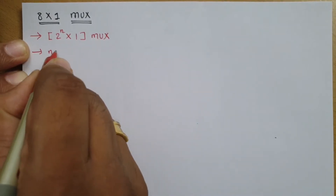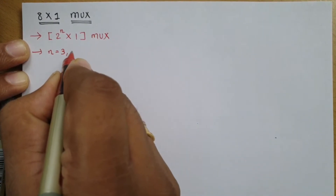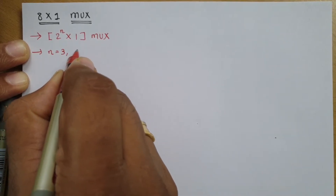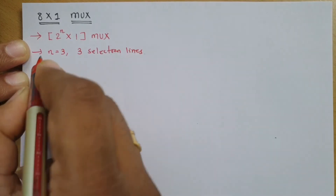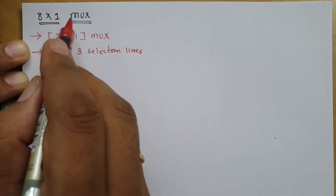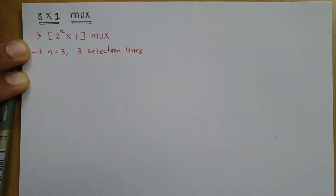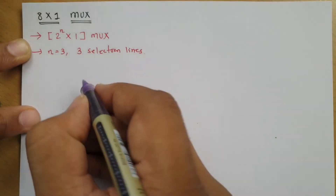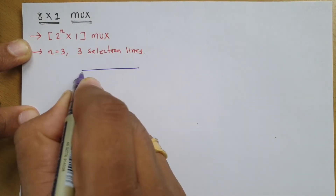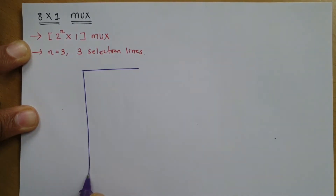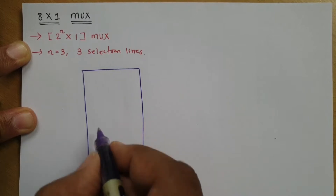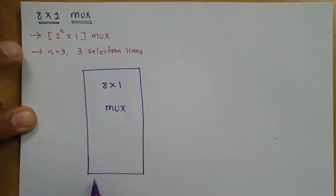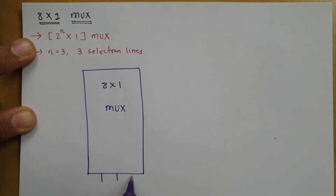Since n equals 3, that means there are a total of 3 selection lines. So, with this 8x1 multiplexer we have a total of 3 selection lines. Let us now form the basic block diagram. Here we have the 8x1 multiplexer with 3 selection lines.